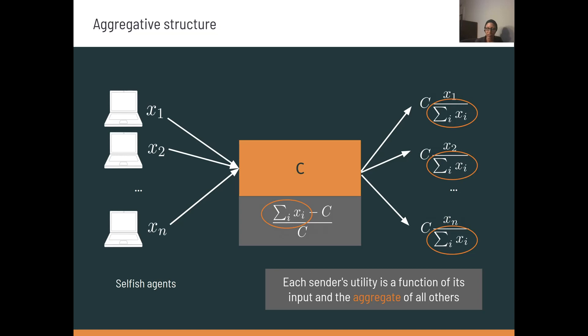So we should be able to use the aggregate input to control individual sender's utilities. I won't go through the proof in this talk, but we can show a monotonicity property of the congestion control game, that as the aggregate of the other player's inputs decreases, the equilibrium rate of the remaining sender increases.